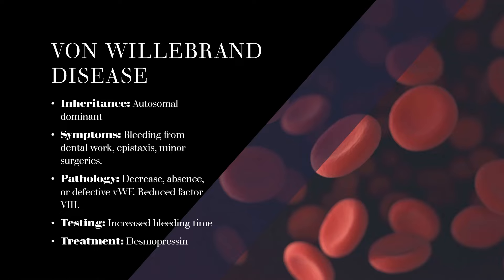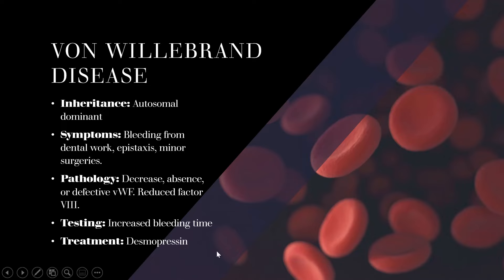With von Willebrand disease, you can also have reduced factor VIII in the coagulation cascade, because von Willebrand factor stabilizes factor VIII. If you don't have enough von Willebrand factor, factor VIII is not stabilized and you have less of it in the blood. Testing-wise, USMLE will test you on bleeding time — which is increased, as it is with all platelet diseases. The treatment for Step 1 is desmopressin (DDAVP), which stimulates granules and Weibel-Palade bodies to secrete more von Willebrand factor, upregulating it in the blood.